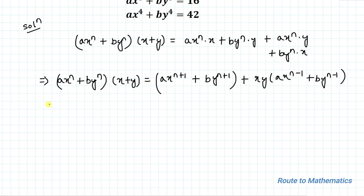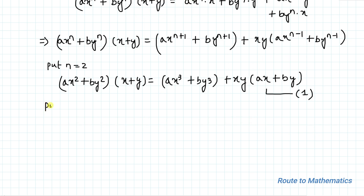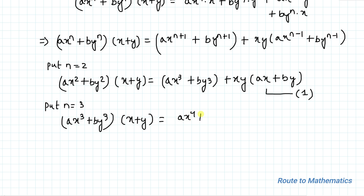Now let's put n equals 2. We get: ax squared plus by squared, multiplied by x plus y, equals ax cubed plus by cubed, plus xy multiplied by ax plus by. Let's call this equation 1. Similarly, putting n equals 3, we get: ax cubed plus by cubed, multiplied by x plus y, equals ax to the power 4 plus by to the power 4, plus xy multiplied by ax squared plus by squared. Let's call this equation 2.